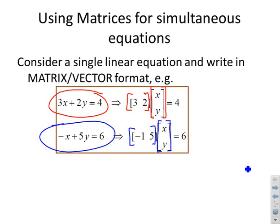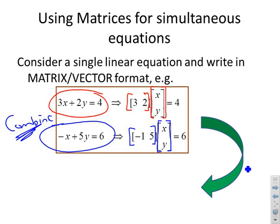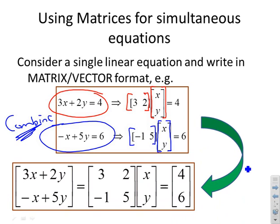The nice thing about matrices is that I can now combine these two equations into a single matrix vector equation. We've put the top equation on the top row of a vector, the bottom equation on the bottom row, and said the top one equals 4 and the bottom one equals 6.